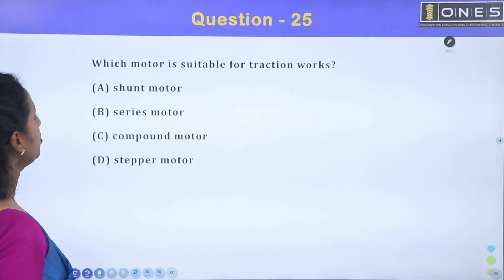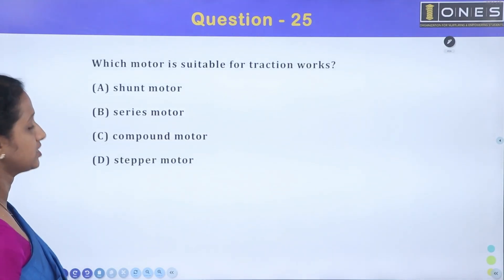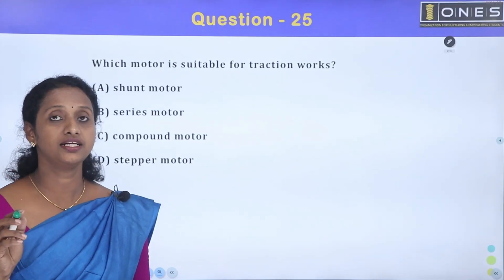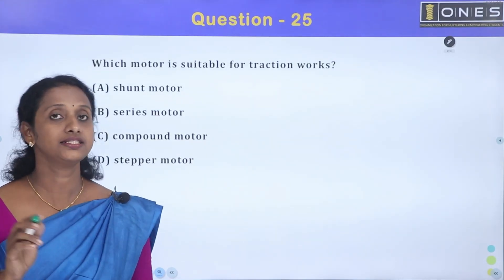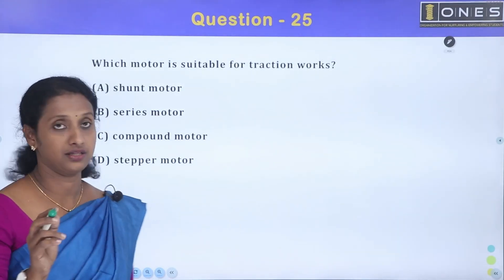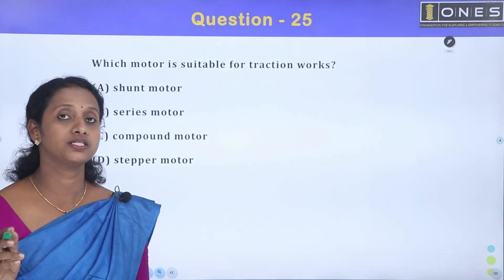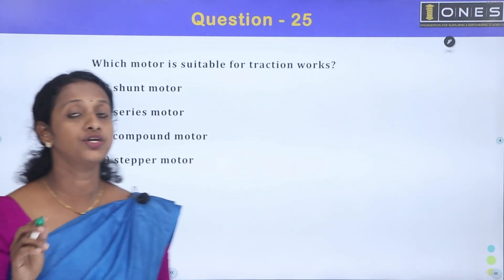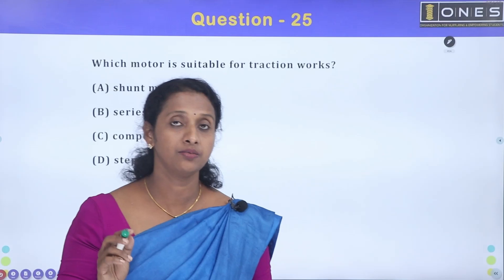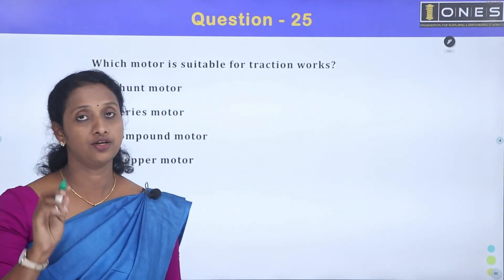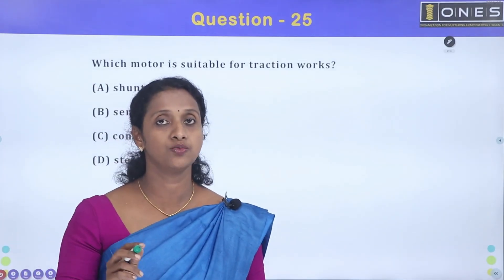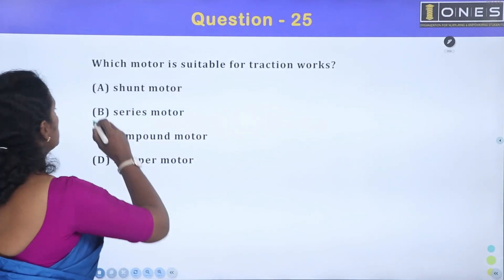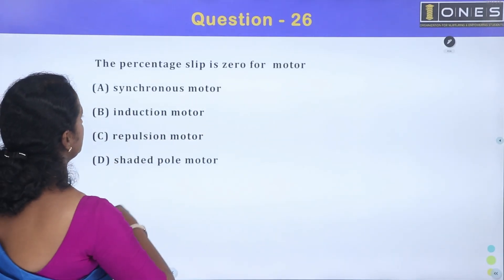Next: which motor is suitable for traction work? Traction work requires high starting torque. For traction purposes, we use a motor with high starting torque — that is a series motor. It has high starting torque, and torque is proportional to I². Option B is the correct answer: series motor for traction work.